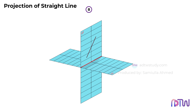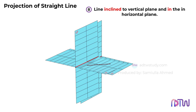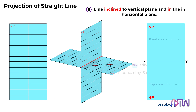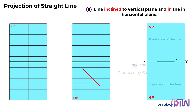Similarly, Position 8: the line is inclined to the vertical plane and lies in the horizontal plane. When we view from the front, the line appears on the reference line and will be shorter than its actual length. When we look from the top, the line appears at an angle to the reference line.